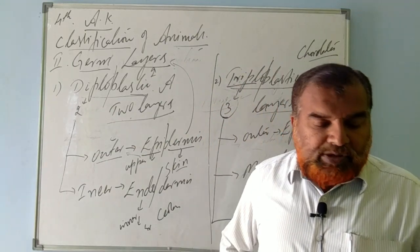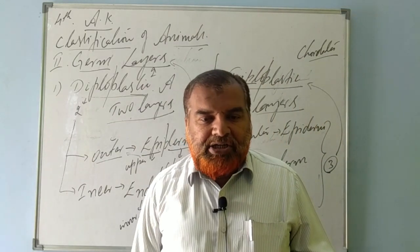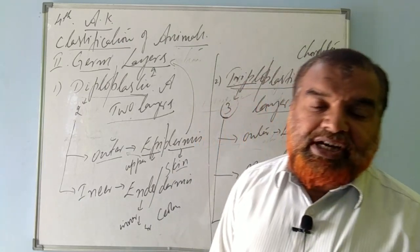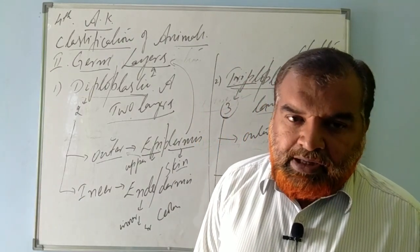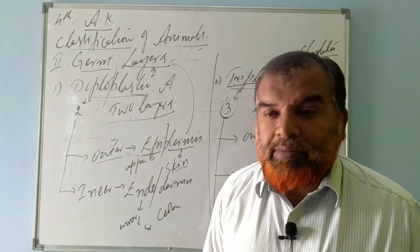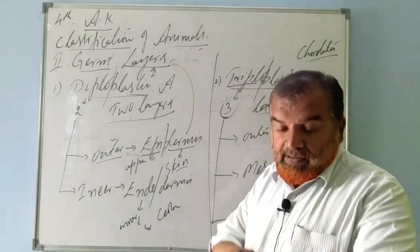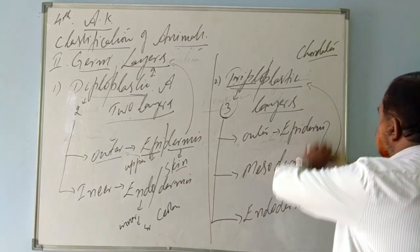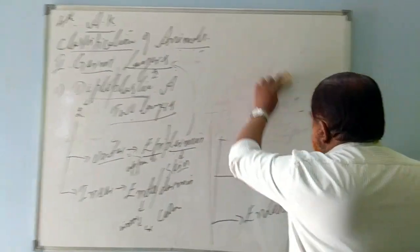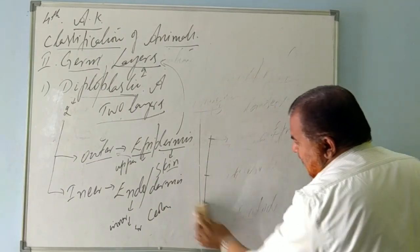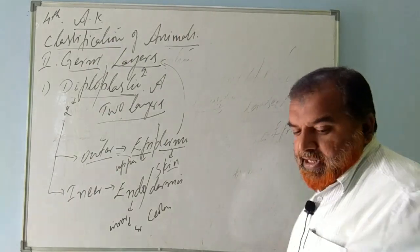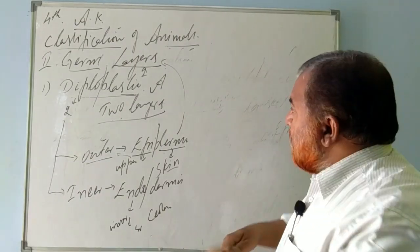So today we have seen two categories: one is level of organization — cellular level, tissue level, and organ level — and the second is diploblastic and triploblastic animals. There is one more category based on coelom — the body cavity.